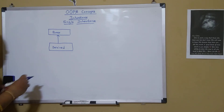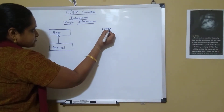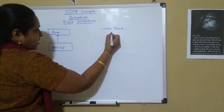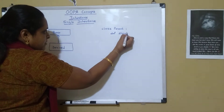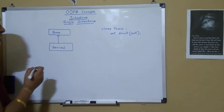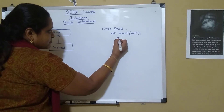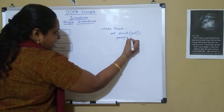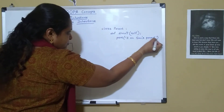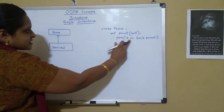Now let's look into a code example for single inheritance. Suppose I have a class called 'Parent' as the base class. Inside it, I define a function called 'showP', with 'self' as the first parameter because it is an instance method. Within the method, I have a print statement: 'I am Sam's parent'.